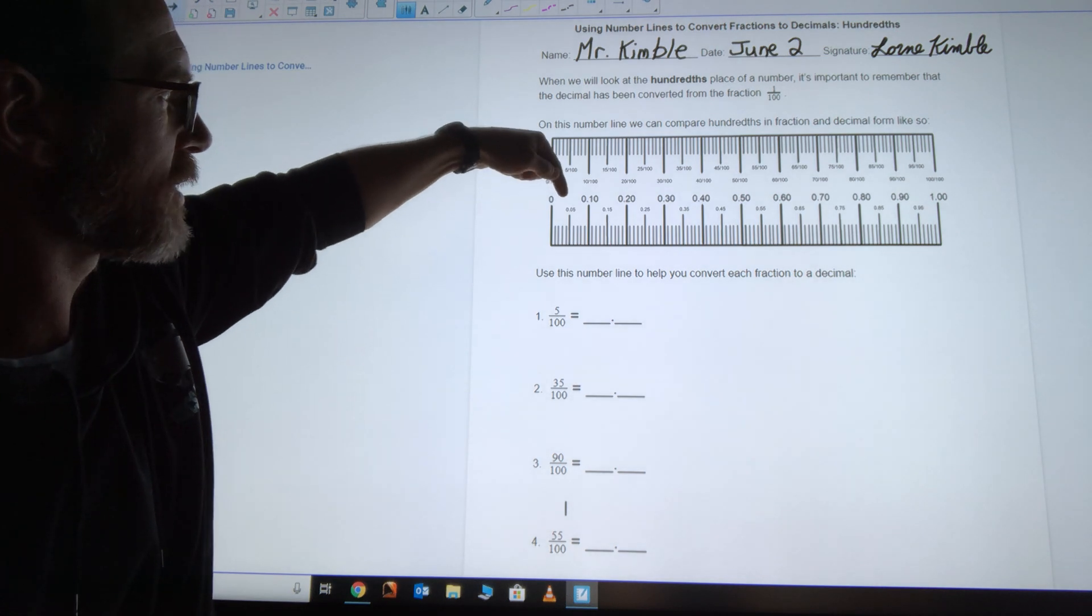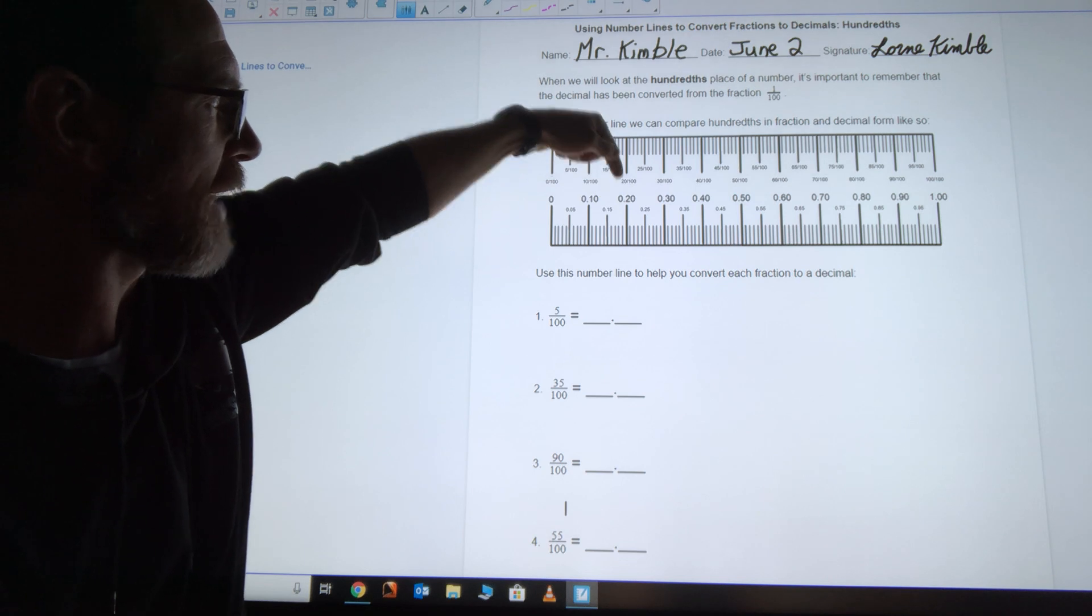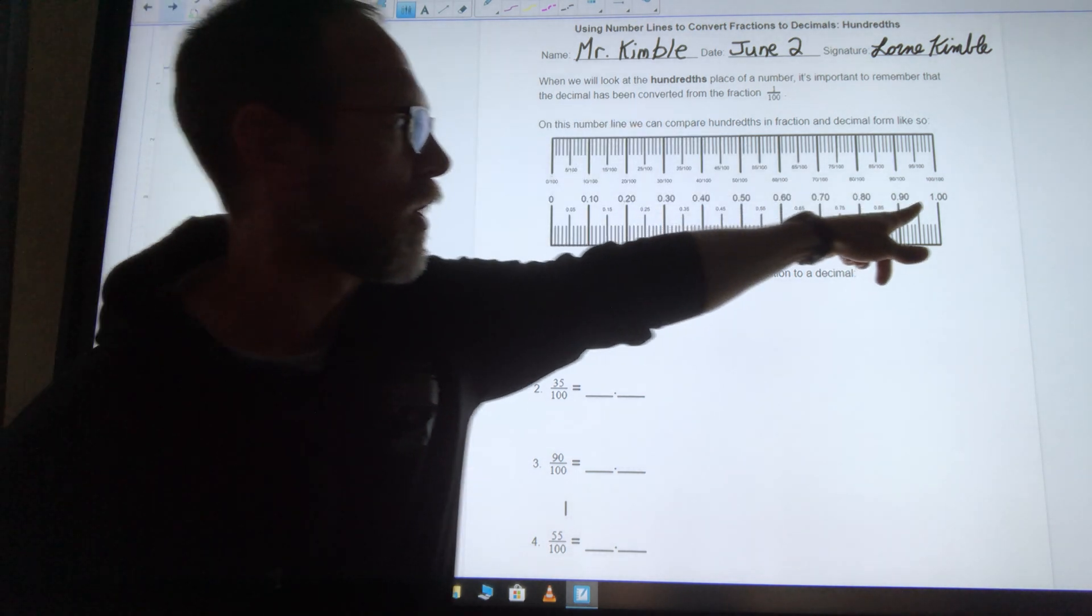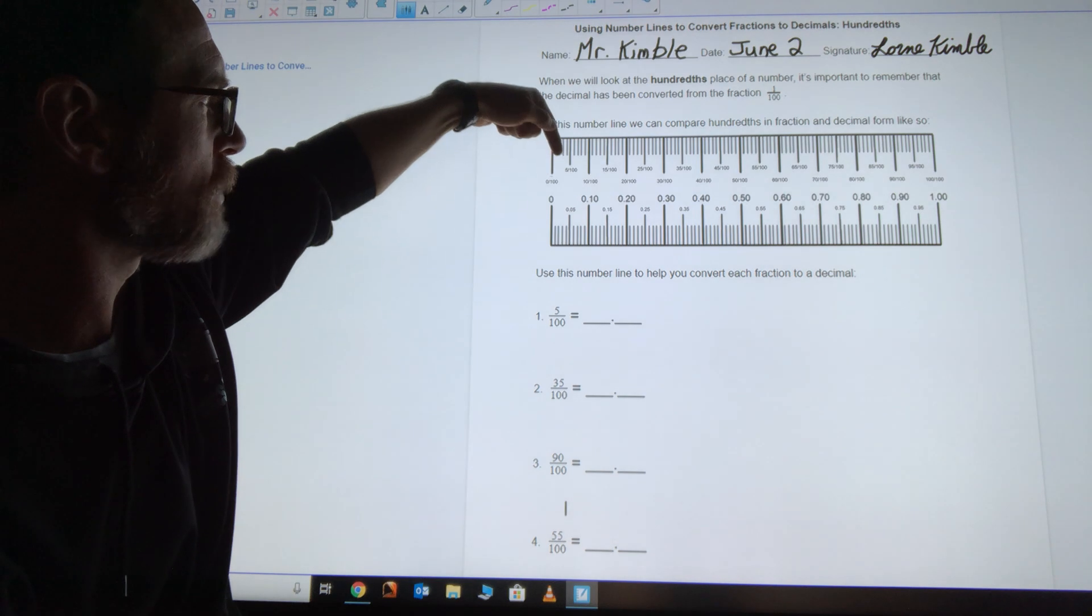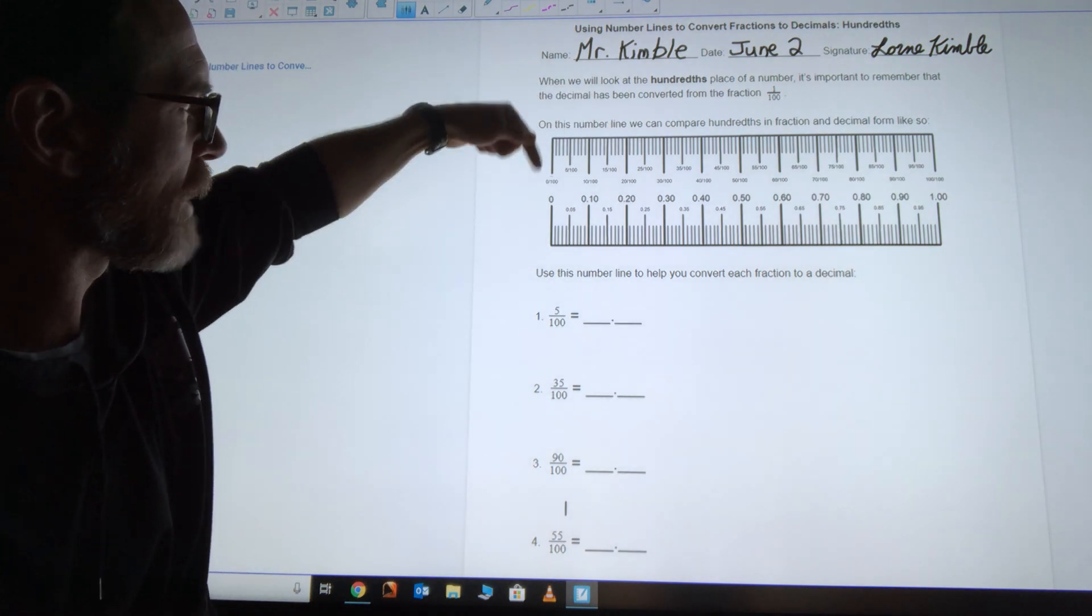So I have zero, and then zero decimal zero five, zero decimal one zero, zero decimal one five, zero decimal two zero, and on and on all the way to one. And then I've shown you the corresponding fraction for that if you look straight above it.